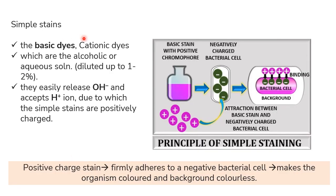As noted earlier, monochrome staining is also called simple staining or positive staining. The dyes used are basic dyes, also known as cationic dyes, available either in alcohol solution or aqueous solution, diluted to one to two percent. These basic dyes easily release OH minus ions and accept H plus ions, which is why the simple stains carry a positive charge.